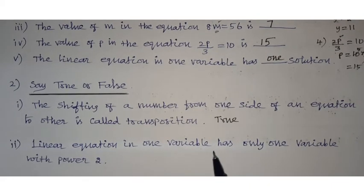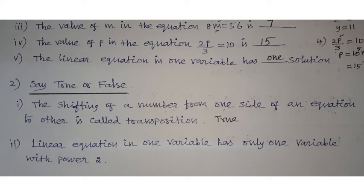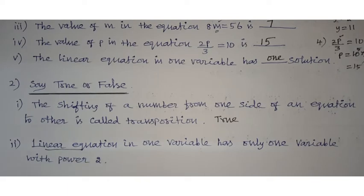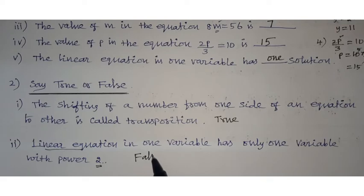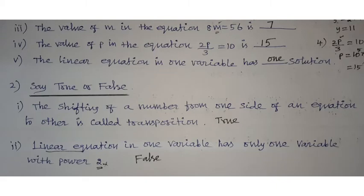Second statement: a linear equation in one variable has only one variable with power 2. This is a false statement. A linear equation means the power value is 1 only — that is the degree of the equation. The degree means the highest power value. Here the given power is 2, so this statement is false.